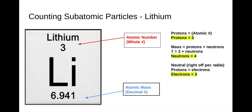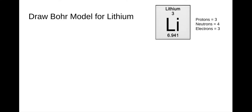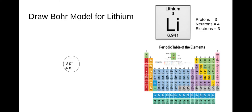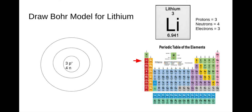Let's go to the Bohr model for lithium. We start by drawing our nucleus with three protons and four neutrons. On the periodic table, lithium is in the second row, so we need to draw two energy levels around the nucleus. Looking at our first row, we fill it up with two electrons for hydrogen and helium. To get to lithium, it's the first element in the second row, so we only need to add one electron there. In our model, we have three protons, four neutrons, and three electrons drawn for lithium.